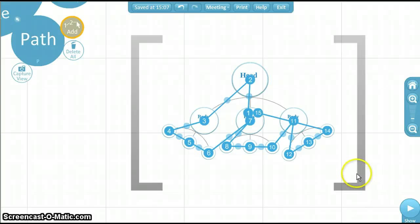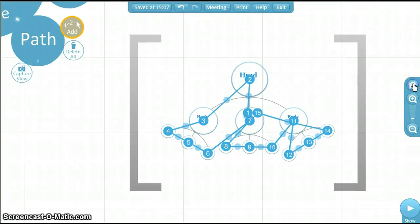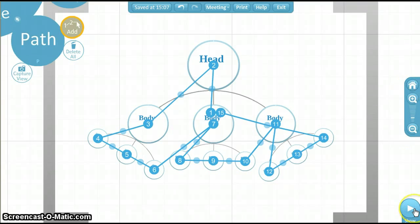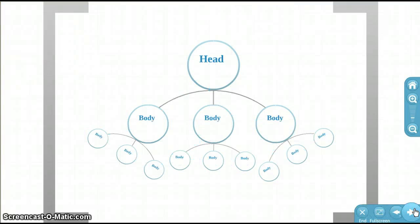Before we preview, click the home button on the right side of the screen. This sets everything back to the home image. Now let's preview. Keep pressing the right arrow until you get back to where you started.